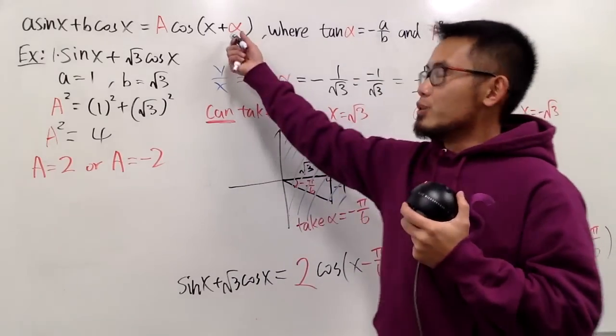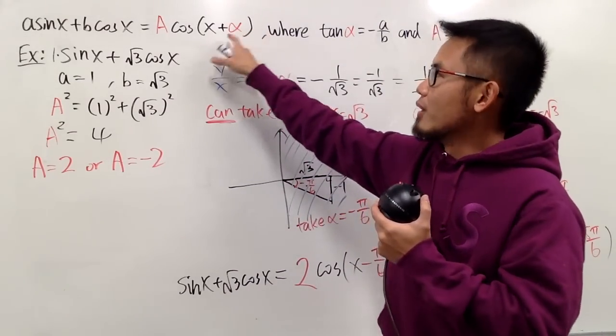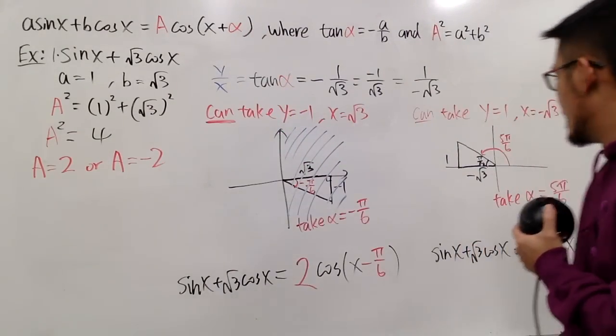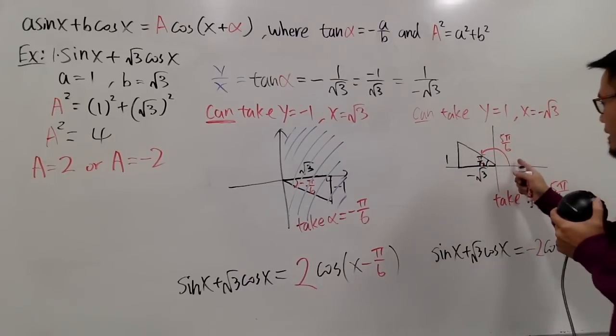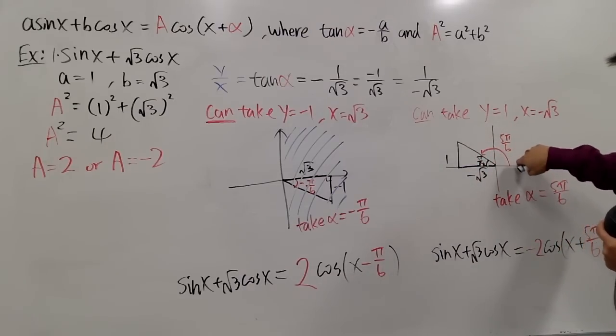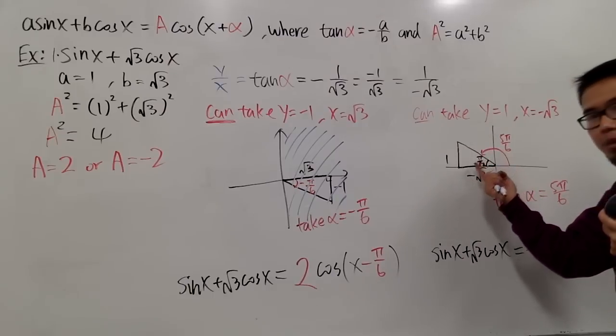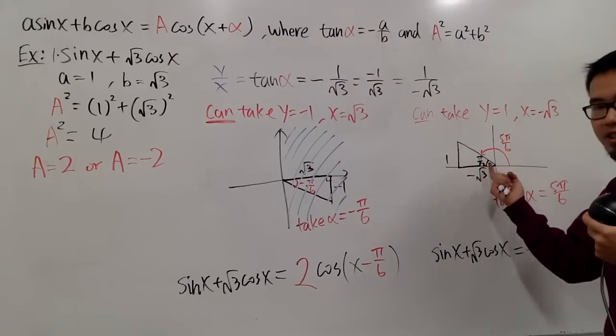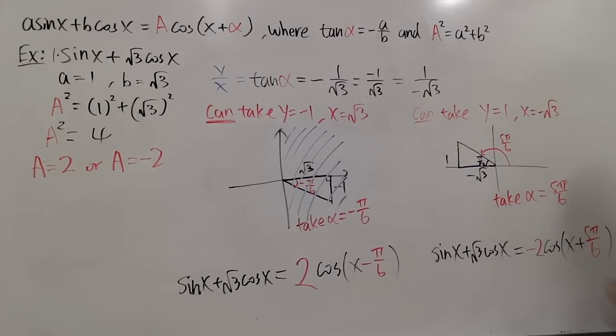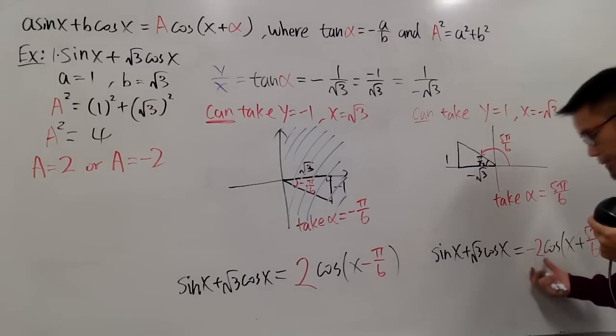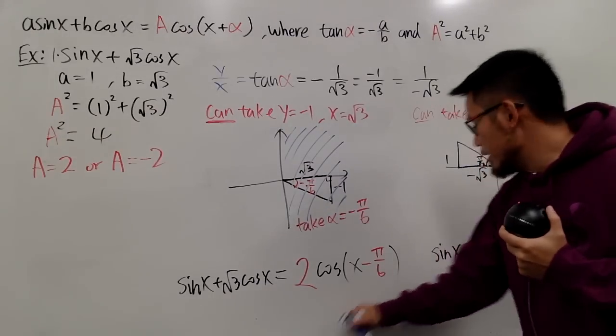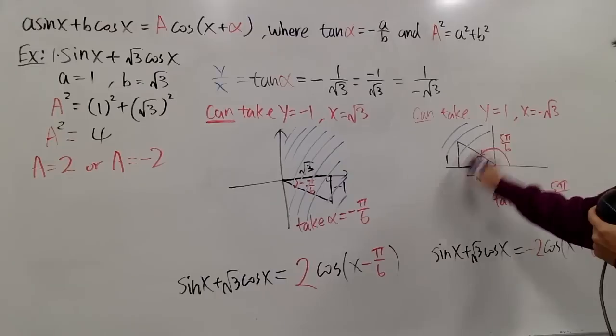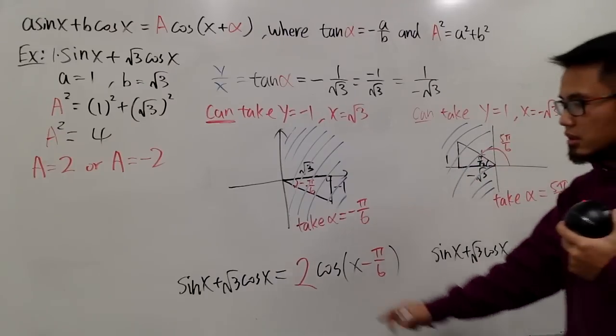Because, once again, you are just talking about a shift of the cosine function. And of course, this is not the only answer for this alpha, because you could have gone from here to here, and that's going to be negative 7 pi over 6. And you can also put it here, but in that case, be sure you use negative A as well. But anyway, it really depends on what alpha you use with the A value.